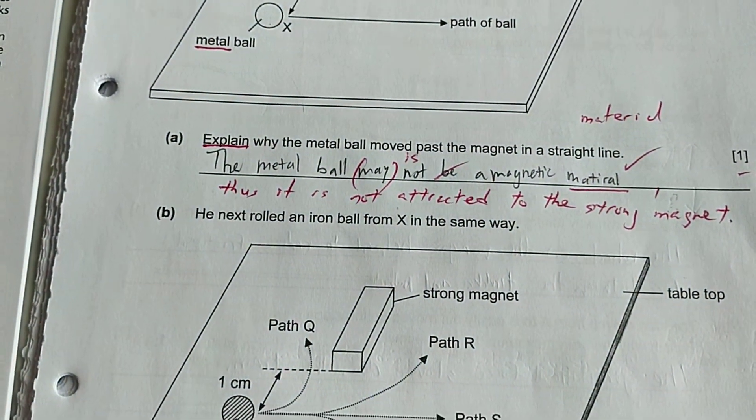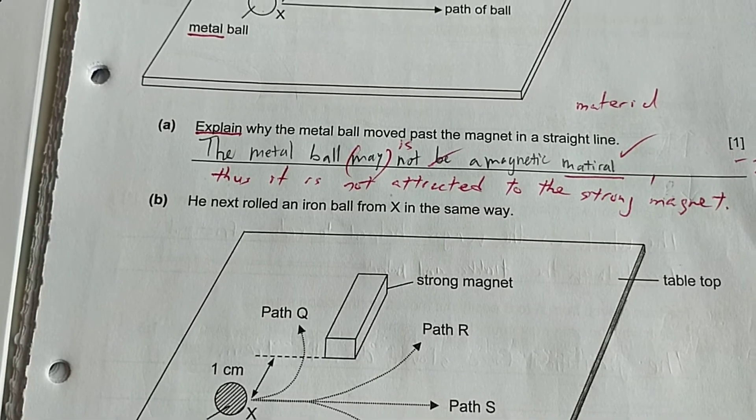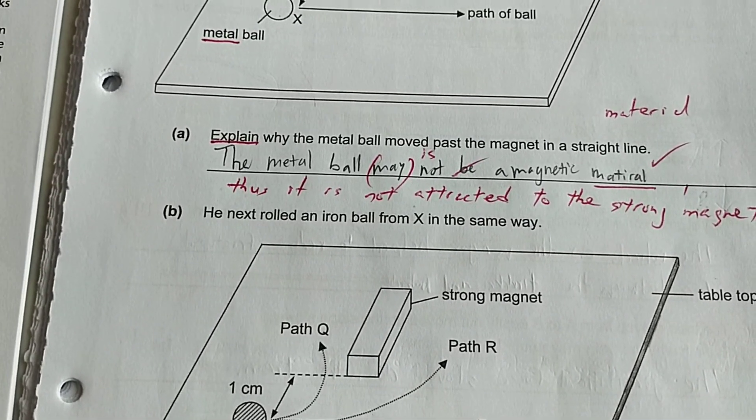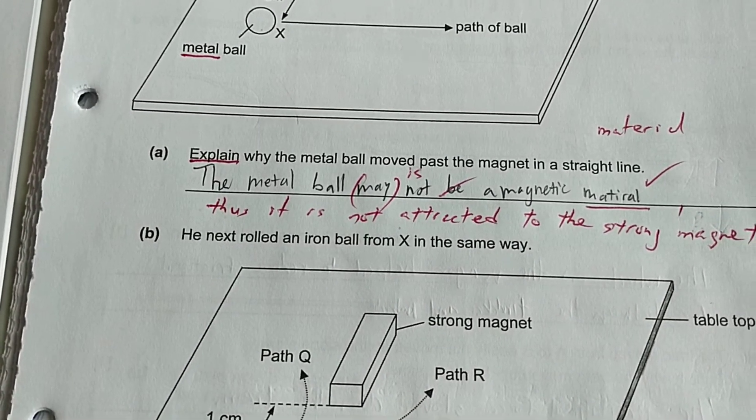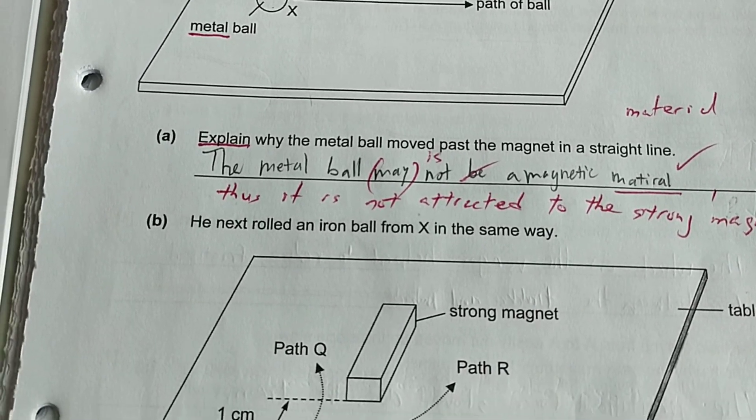We need to be very specific because may not means there's still a chance of it becoming a magnetic material. So the more direct answer is the metal ball is non-magnetic, or you can say the metal ball is not a magnetic material.